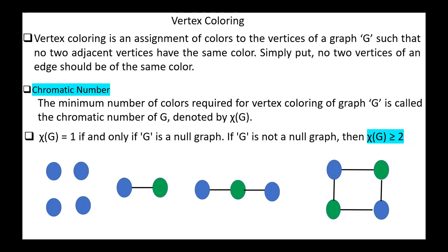Chi of G equals one if and only if G is a null graph. If G is not a null graph, then Chi of G is greater than or equal to two. For example, in these graphs, Chi of G equals two. In this graph we have two vertices — one blue, one green — and these three vertices, and to color them we need two colors only.